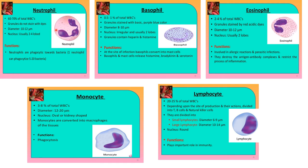The first type of granulocyte is the neutrophil. It constitutes 60 to 70% of total WBCs. Granules are present but they do not stain with dyes. Diameter is 10 to 12 nanometers. The nucleus is usually 2 to 4 lobes. The function is phagocytic — it can engulf bacteria — and one neutrophil can phagocytose 5 to 20 bacteria.